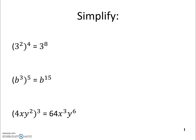The same for the next example, b cubed to the 5th. We're multiplying 3 times 5 to get b to the 15th. So we have 4 on our last example on this page, 4xy squared, the whole quantity cubed.